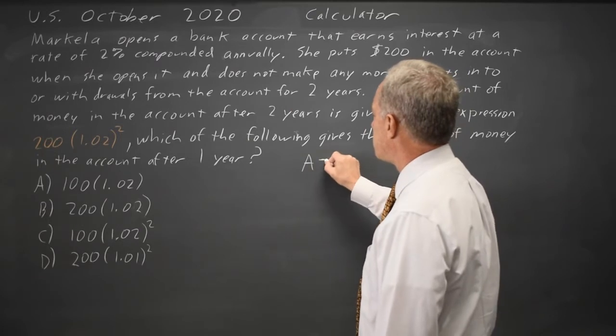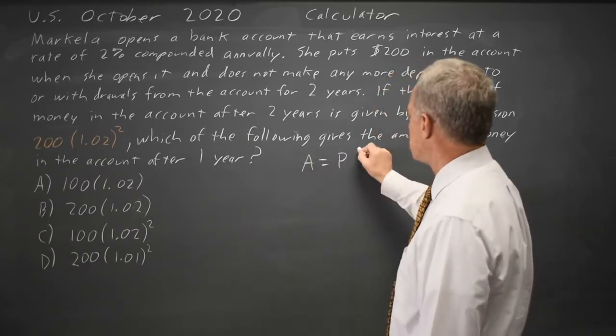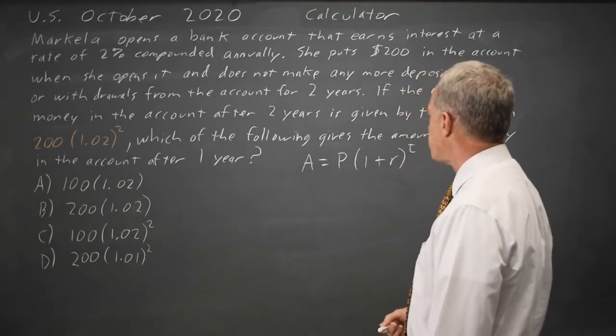The amount in the account is your principal, the initial deposit, if there's only one deposit, times one plus your interest rate to the T, where T is the number of years.